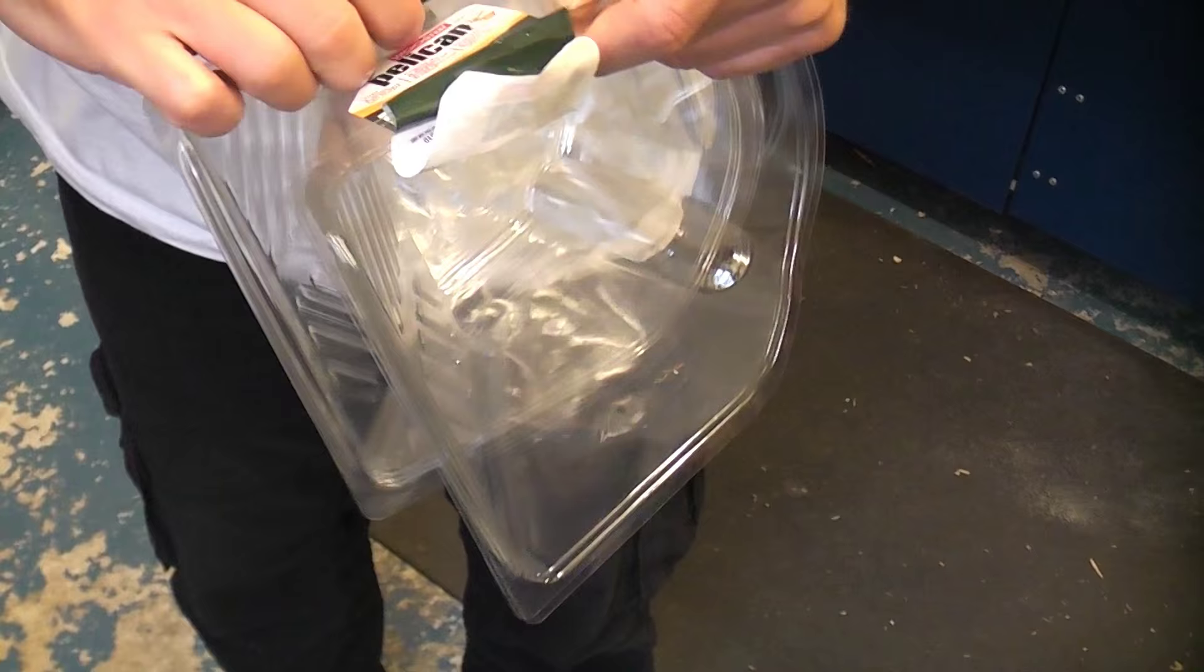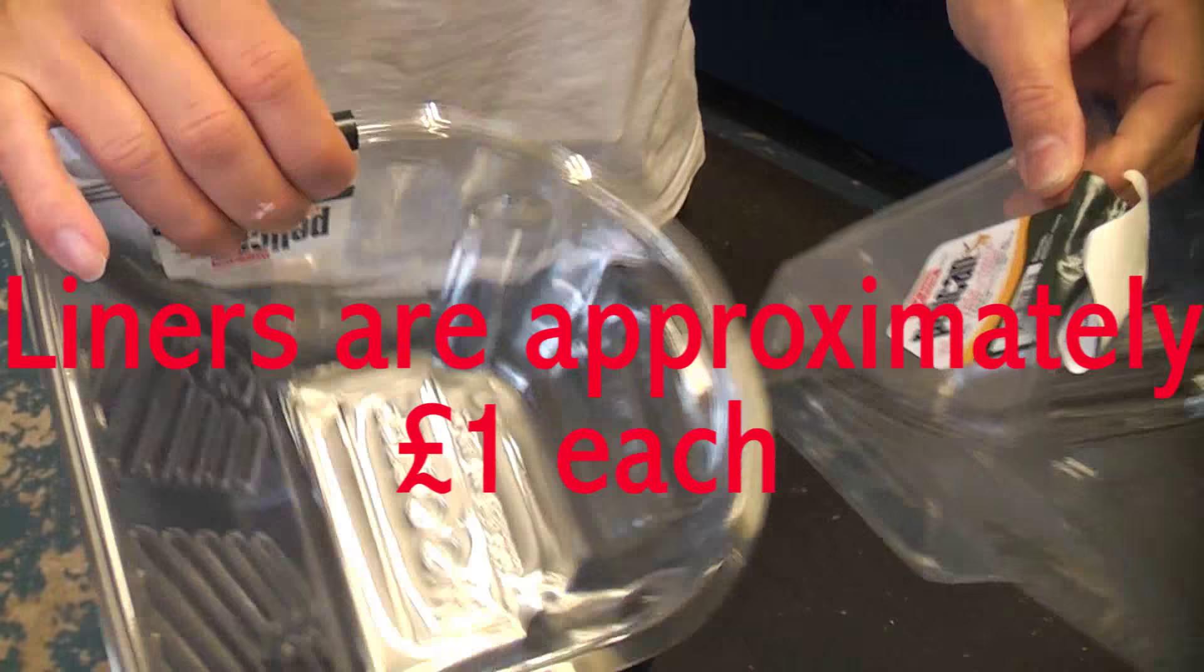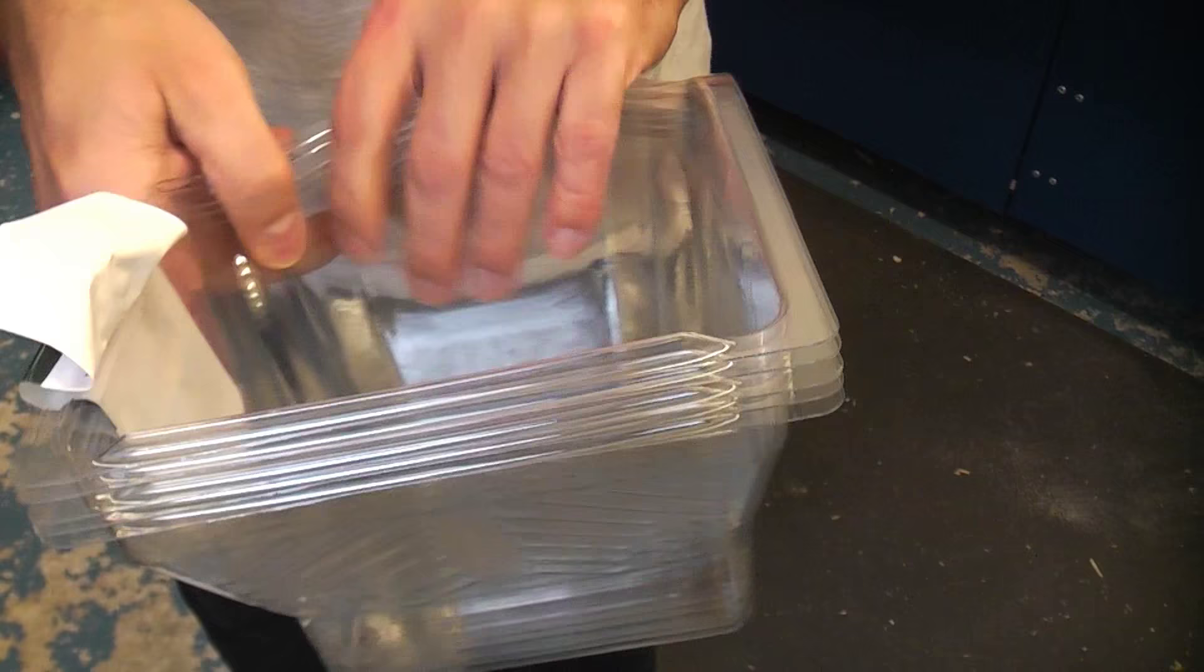The liners that go in it are not expensive. I can't remember exactly how much these are, but you can buy them in packs of three. They simply slot in there, and it actually saves you washing out the tray every time you are doing a color change.